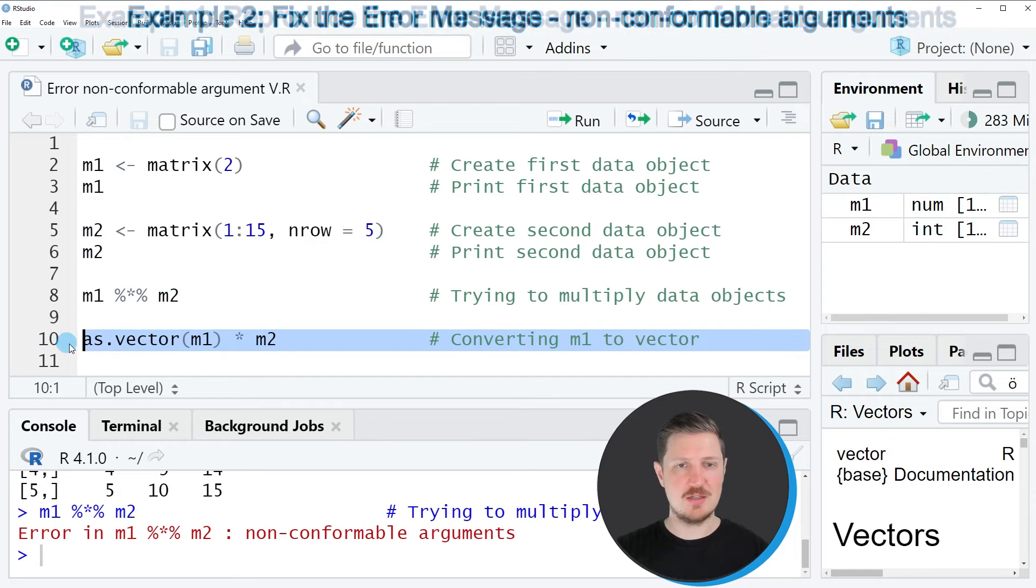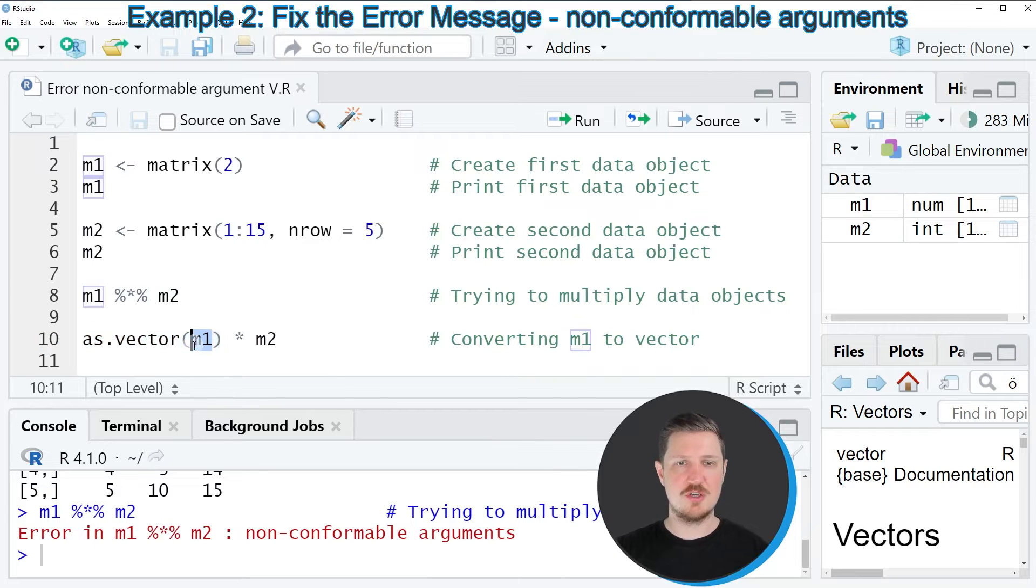If you want to do that we need to apply the code that you can see in line 10. In this line of code I'm first converting our first matrix object which contains only a single value to a vector object using the as.vector function. Then I'm using this simple multiplication operator to multiply the value 2 in this data object with the values in our matrix object m2.